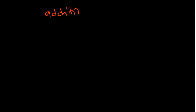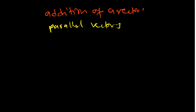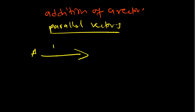Let's talk about addition of vectors. Let's talk of parallel vectors first. When two vectors are parallel, let's say we have vector A pointing in this direction with 10 newtons, and vector B with 5 newtons. Now let's find A plus B.